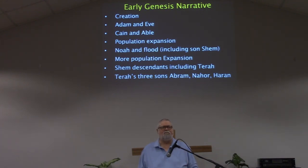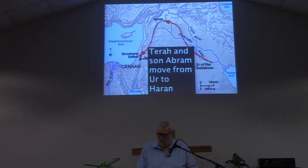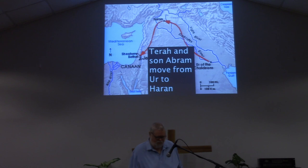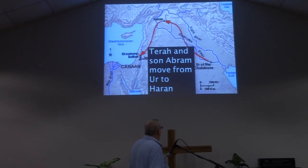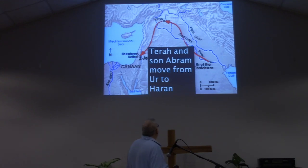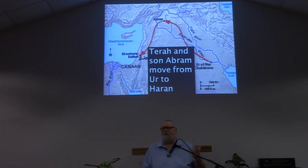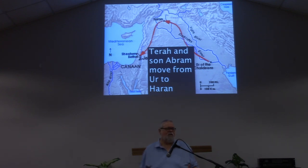Right at the end of chapter 11, we're told that Terah, along with his son Abraham, moved from Ur to Haran. You can see down here is Ur of the Chaldeans — that's the Iraq and Iran area. Terah and Abraham took this journey up to Haran. We're told they were actually intending to go to the Canaan land, but that they stopped there and hung out. That is what is going on when the story I want to look at today picks up.